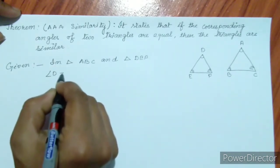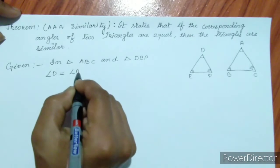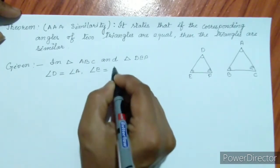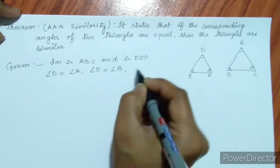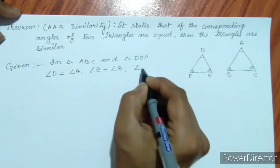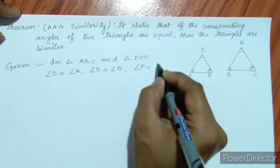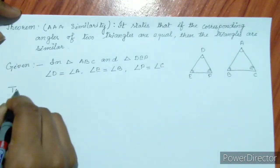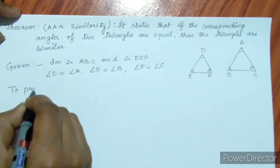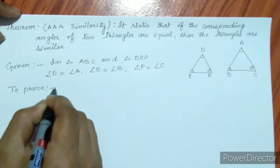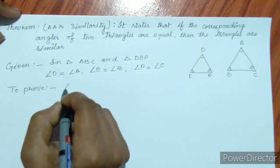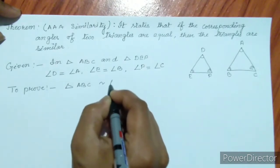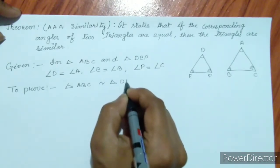Given: angle D is equal to angle A, angle E is equal to angle B, and angle F is equal to angle C. To prove: triangle ABC is similar to triangle DEF.